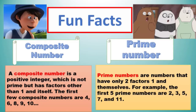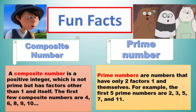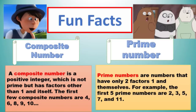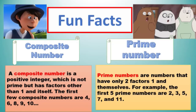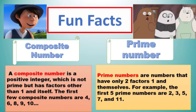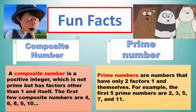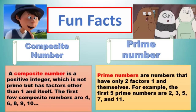جبکہ prime numbers ایسے numbers ہوتے ہیں جن کے صرف دو factors ہوتے ہیں — ایک یہ خود اور دوسرا number one۔ آسان لفظوں میں، prime numbers ایسے numbers ہوتے ہیں جو صرف خود پہ یا one پہ divide ہوتے ہیں۔